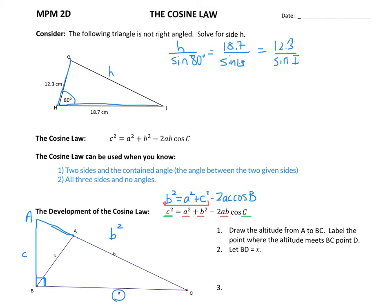However, angle B is not 90 degrees — it's actually acute, which shortens side B. So that's why we're subtracting a component: we're subtracting part of it, and it's dependent on the cosine of angle B — on what that angle in the bottom corner is.